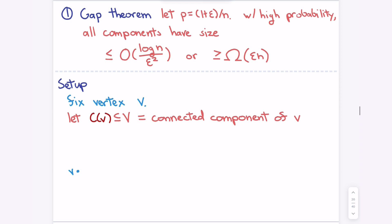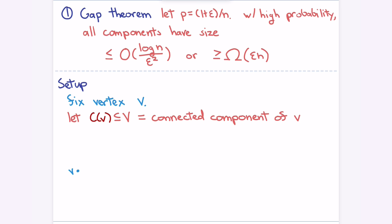We'll focus on the gap theorem — no intermediate components. I want to show every component has size at most log(n)/epsilon squared, or it's really big. What we'll do is focus on one vertex first and argue that its component is either going to be really small or really big — it won't be in between.